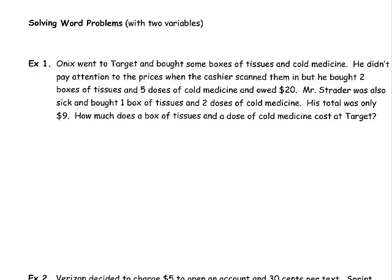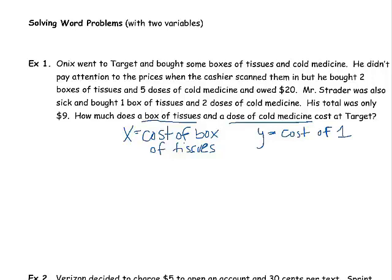So let's think about the parts that it takes, what it takes to set up a system. And the first thing would be the variables. So what don't we know? Basically, what are we trying to figure out? We want to figure out the cost of a box of tissues and the cost of a dose of cold medicine.